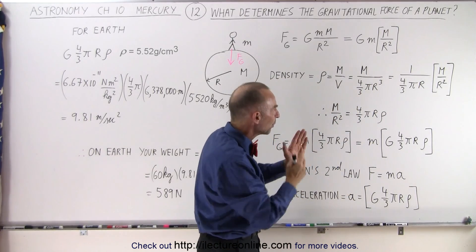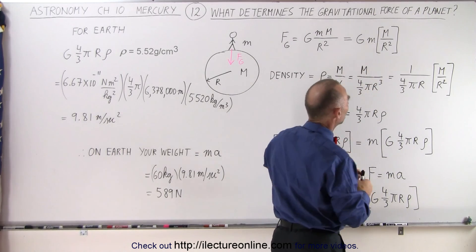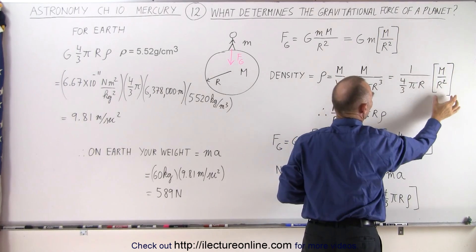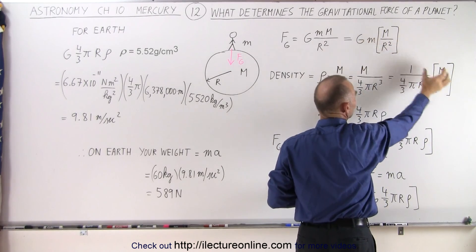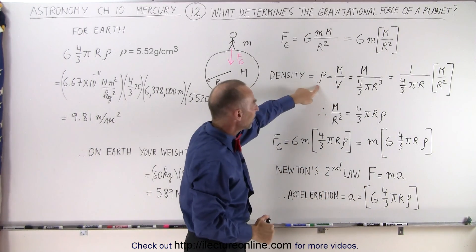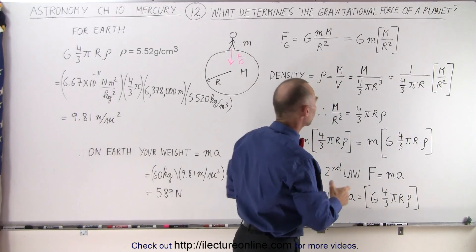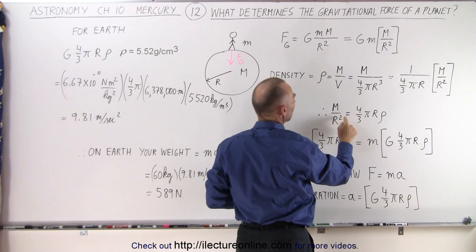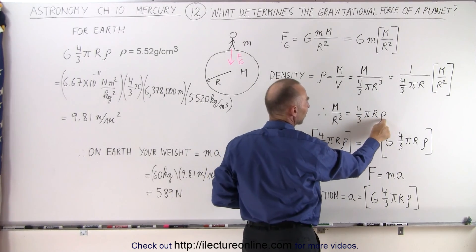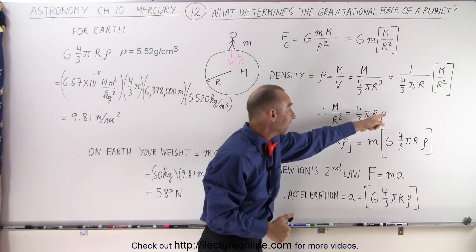Now if we rearrange things a little bit and factor out an m and an r squared, this becomes one over four-thirds pi r times the quantity m over r squared — which is the quantity we have in the gravity equation. So we can solve for m over r squared in terms of density: m over r squared becomes four-thirds pi r times the density of the planet, where r is the radius and rho is the density.